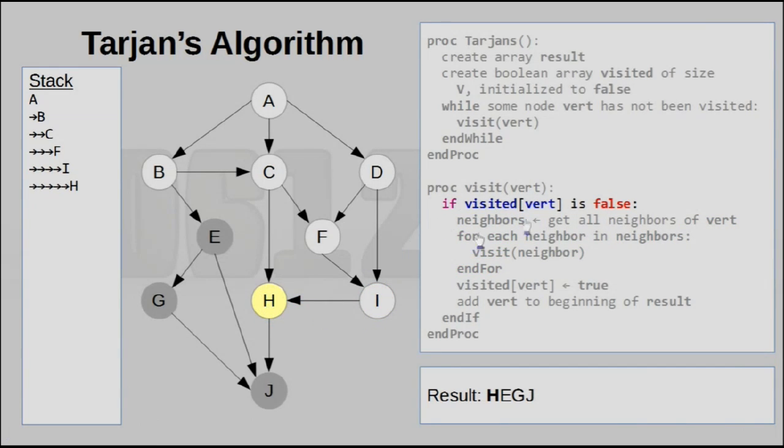Since H is visited, we can do nothing, we can simply backtrack. This allows us to add I to the result. We backtrack further, this allows us to add F to the result. We backtrack once again, this allows us to add C to the result. In fact, we can backtrack once more to B, adding that to the result as well.